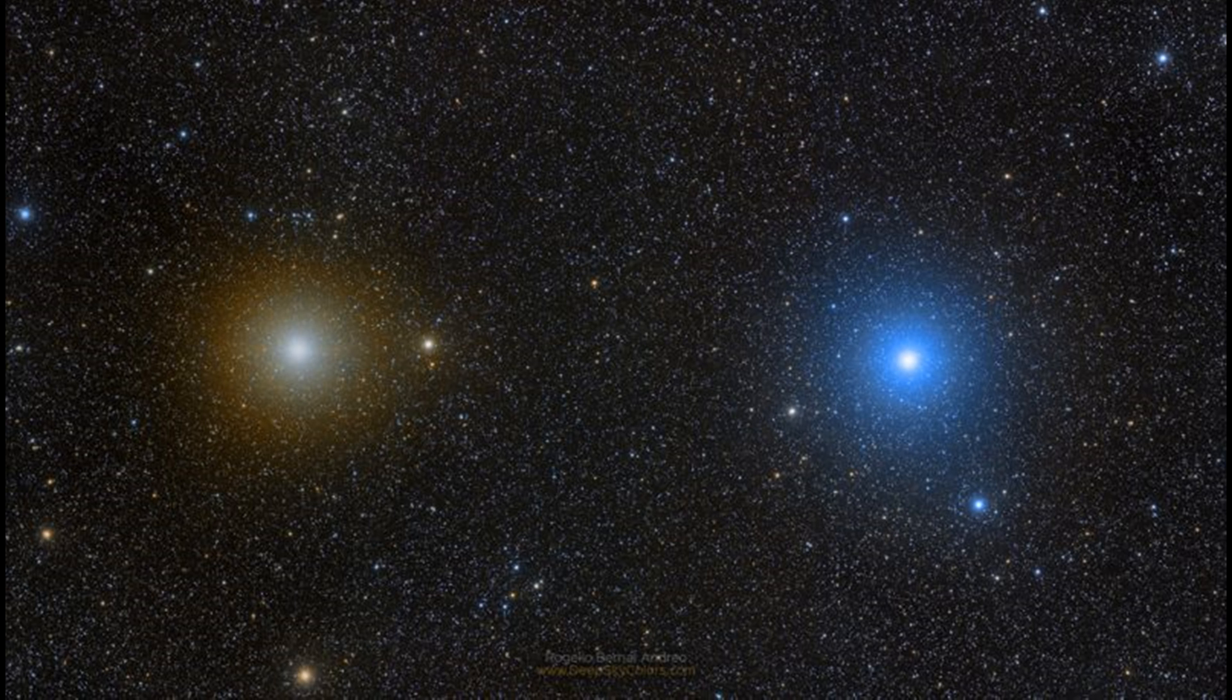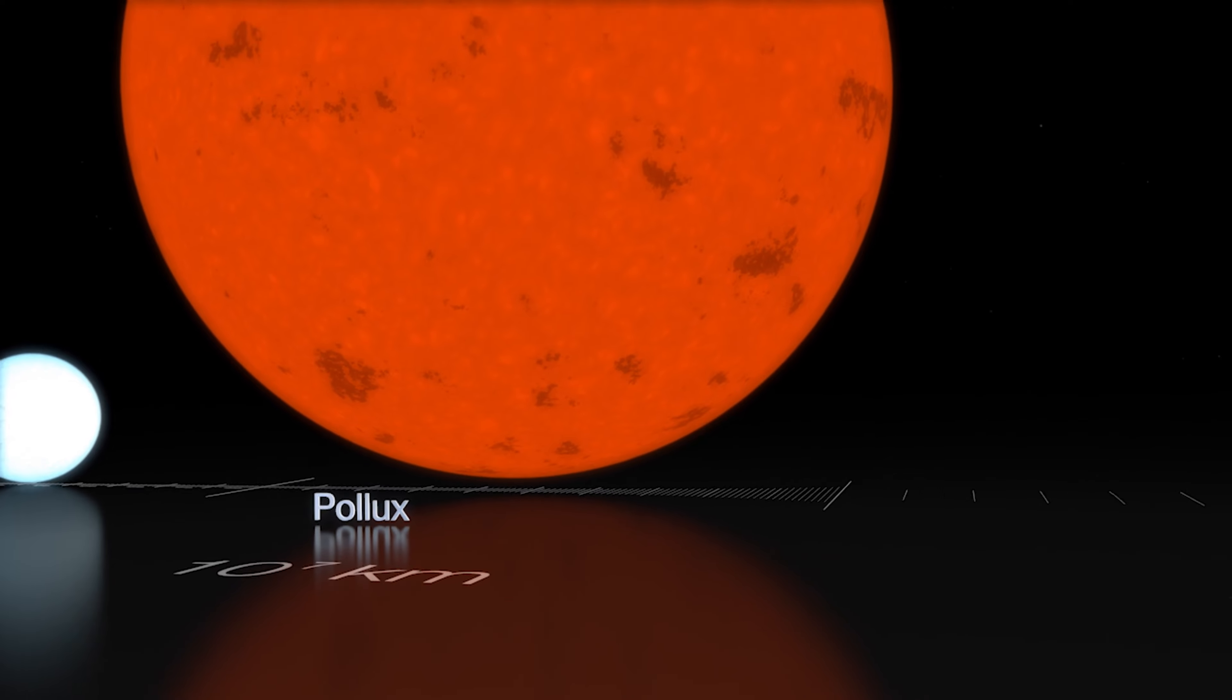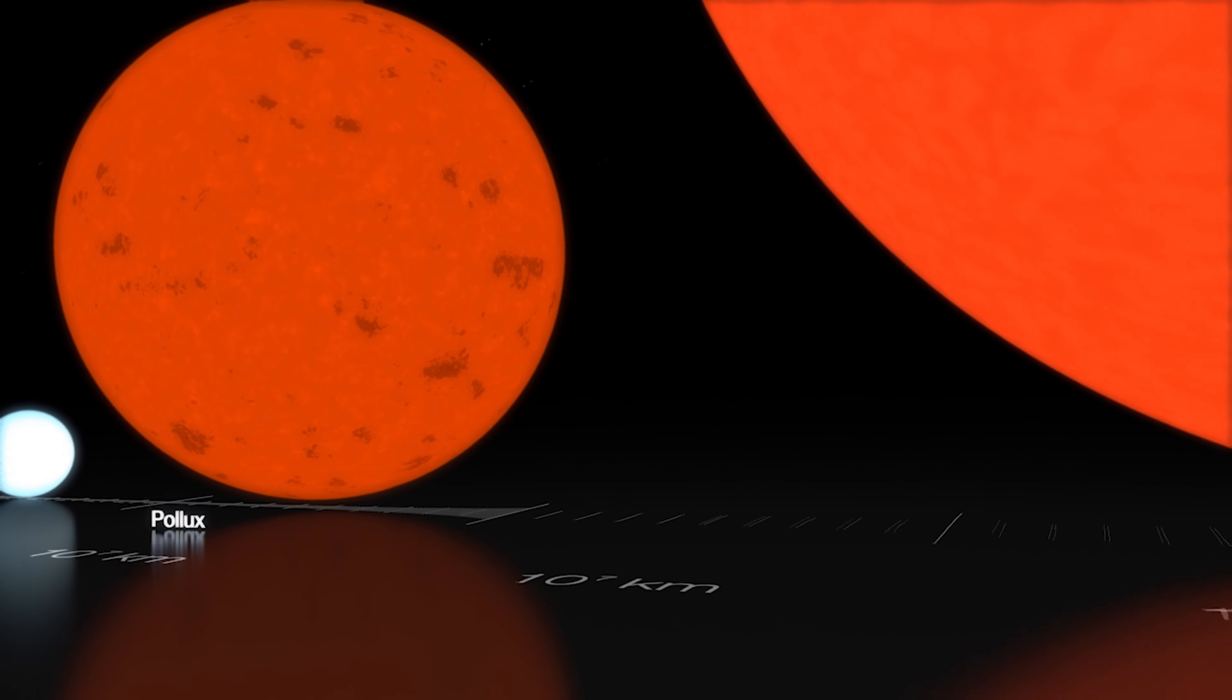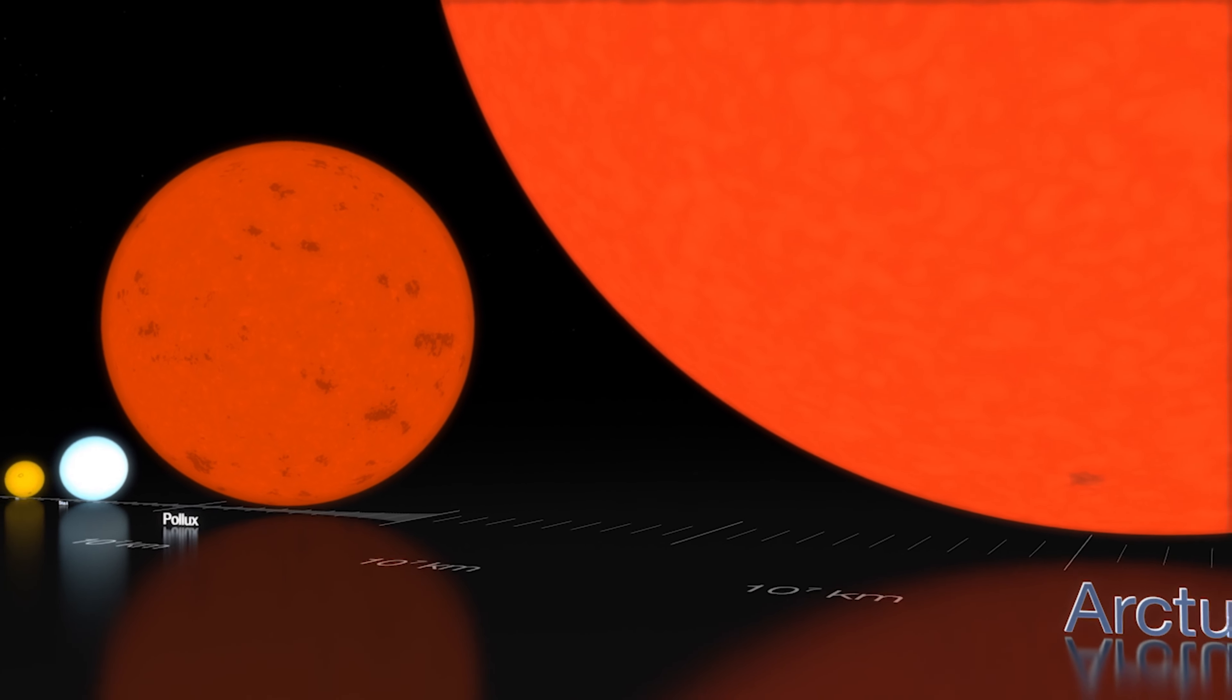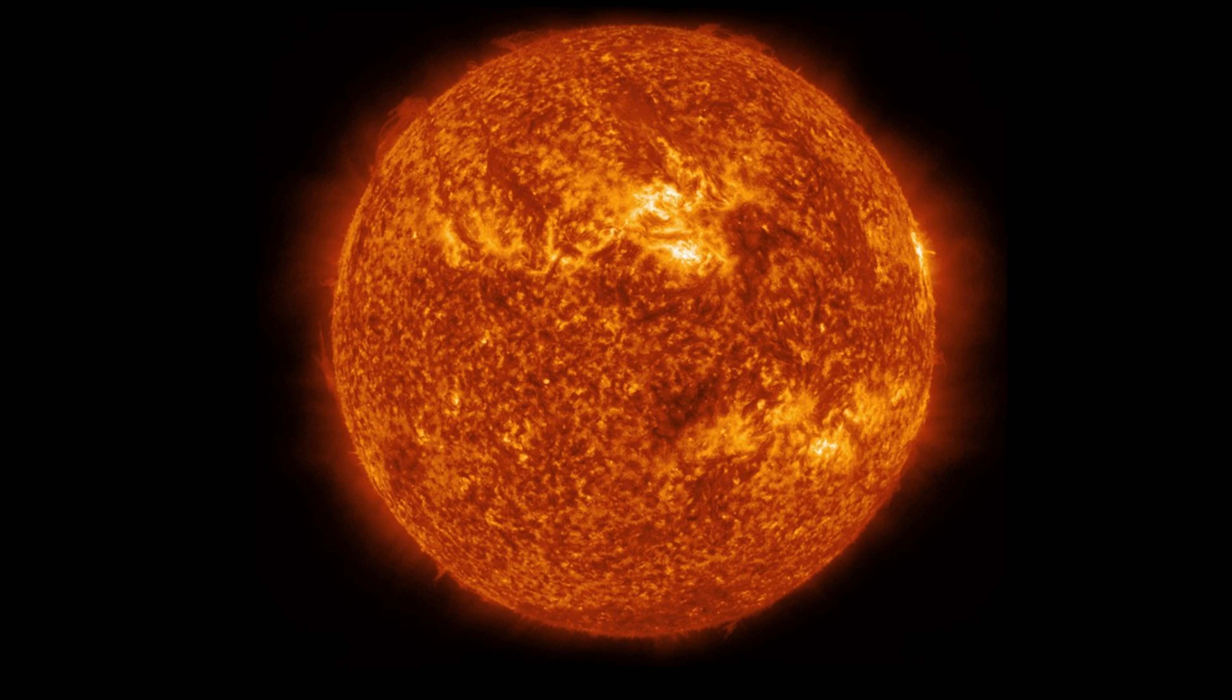Arcturus is about the same mass as the Sun but has expanded to 25 times its size and is around 170 times as luminous. Its diameter is 35 million kilometers.